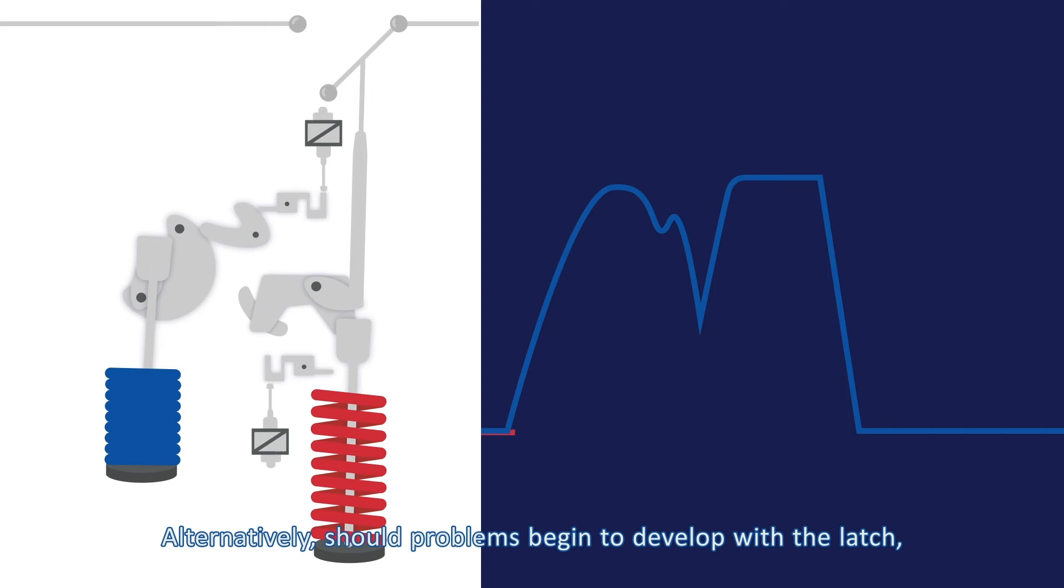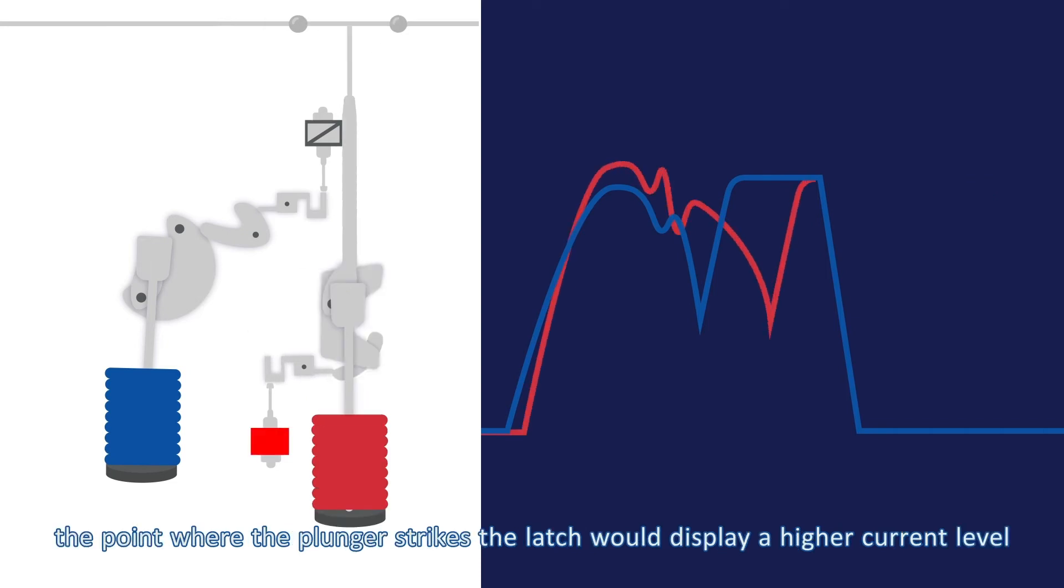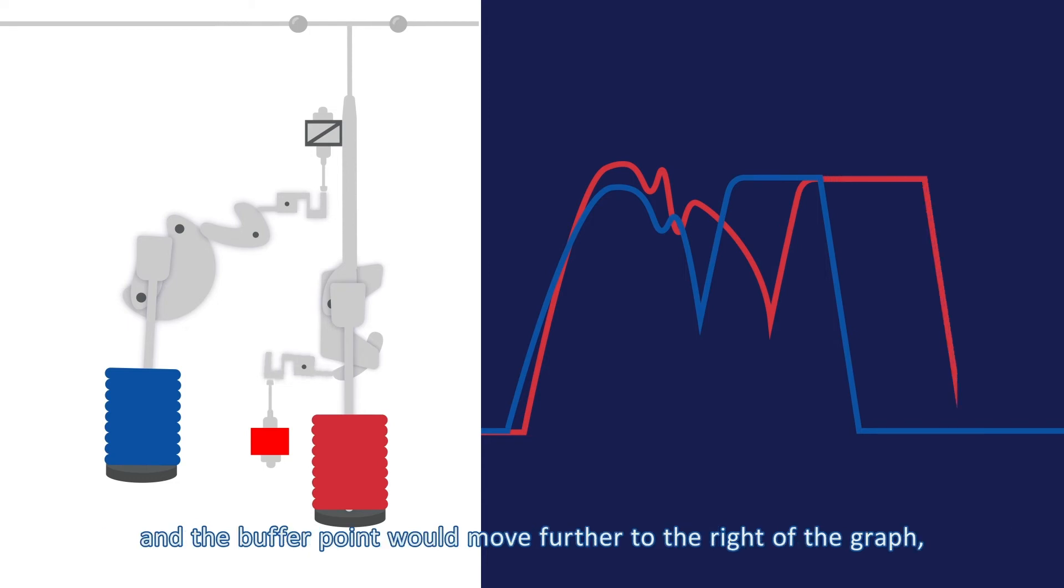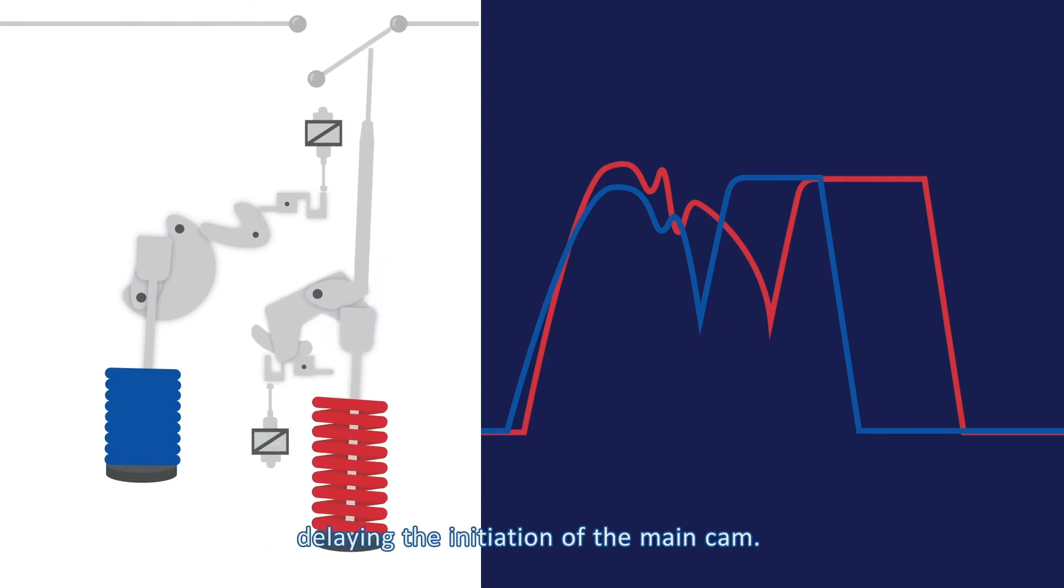Alternatively, should problems begin to develop with the latch, the point where the plunger strikes the latch would display a higher current level and the buffer point would move further to the right of the graph, indicating that the breaker took longer to release the latch, delaying the initiation of the main cam.